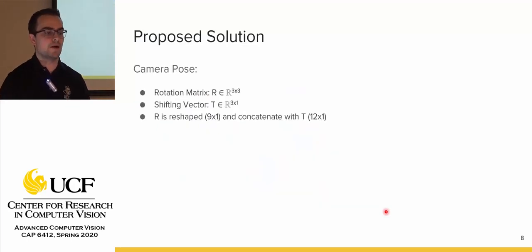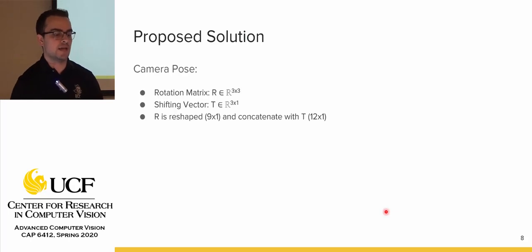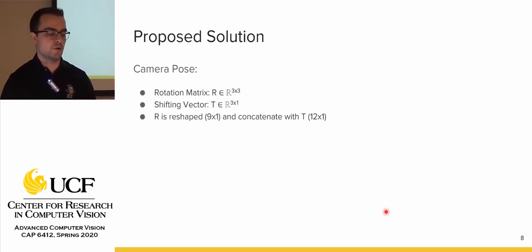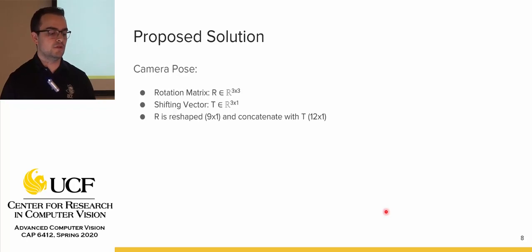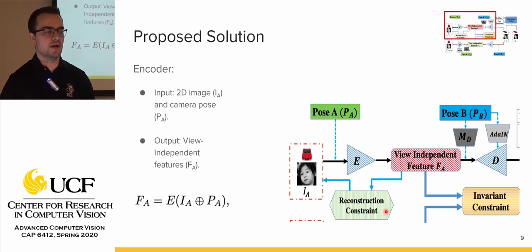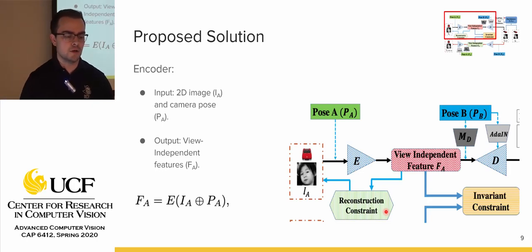As background, the architecture takes the camera pose as input. The camera pose consists of a 3x3 rotation matrix and a 3x1 shifting vector. The rotation matrix is reshaped to a 9x1 vector and concatenated with the shifting vector to form a 12x1 vector.